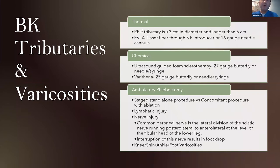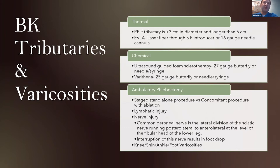Moving from axial vein treatment below the knee to treating below-knee tributaries and varicosities — many choices exist, each with advantages and disadvantages. Below-knee tributary disease can be treated using thermal modalities for sizable tributaries if permitted by insurance. However, the more common methods include chemical ablation and ambulatory phlebectomy. Chemical ablation includes ultrasound-guided foam sclerotherapy and Varathena, allowing us to treat multiple areas, branching vessels, and even superficial disease safely. We must consider vessel size, long-term closure rates, and insurance limitations. Ambulatory phlebectomy is very effective and usually permitted by all insurances, but can be associated with pain, scarring, and lymphatic and nerve injuries.